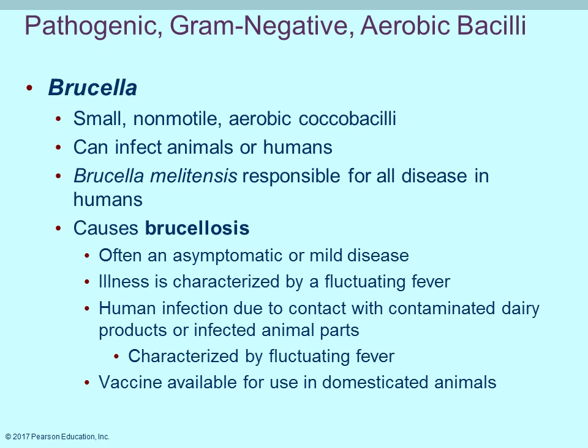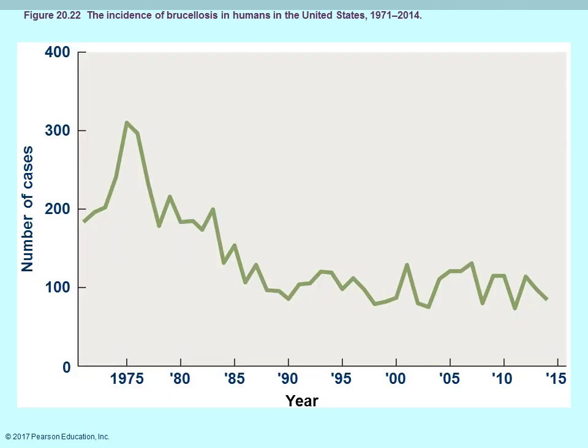Brucella is a non-motile, small, aerobic coccobacillus that is gram-negative and can infect both animals and humans, causing Brucellosis. Many times individuals are asymptomatic or show a fluctuating fever — fever followed by feeling fine, then fever again. Infection typically occurs by handling contaminated animals or consuming contaminated dairy products. The number of cases has been decreasing, which is a positive sign.